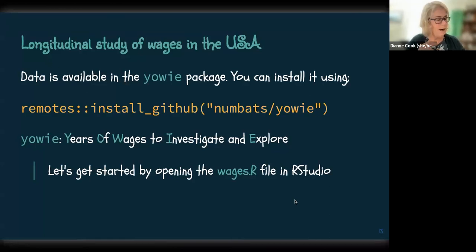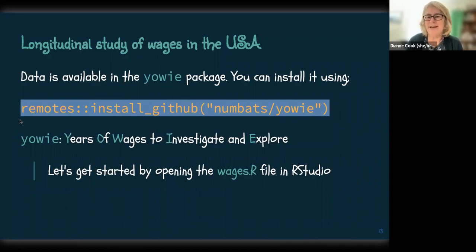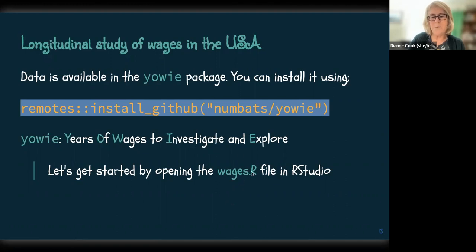I'm going to focus on this EDA process today using data in the YOWIE package. If you have your laptop, you can install it from GitHub — we haven't submitted to CRAN yet but that should be soon. The name comes from Australian legend: a yowie is something akin to Bigfoot or Sasquatch. As an acronym, it stands for 'Years of Wages to Investigate and Explore.'